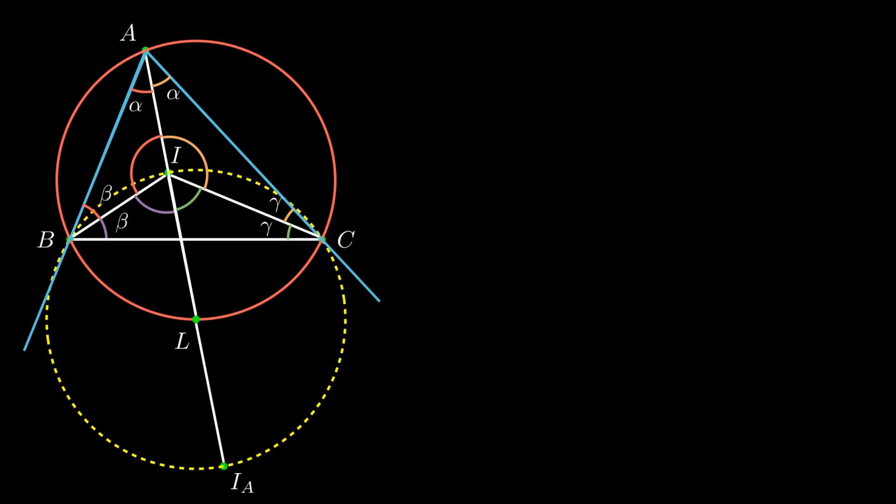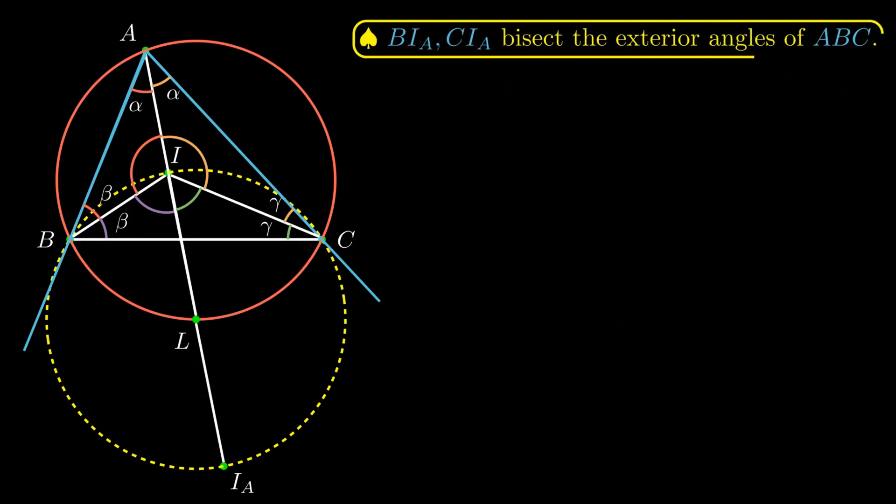Now we'll move on to the second fact, which is to prove that the lines BI sub A and CI sub A are the exterior angle bisectors. This is actually equivalent to showing that angle I sub A, B, C is half of the supplementary angle of angle ABC.